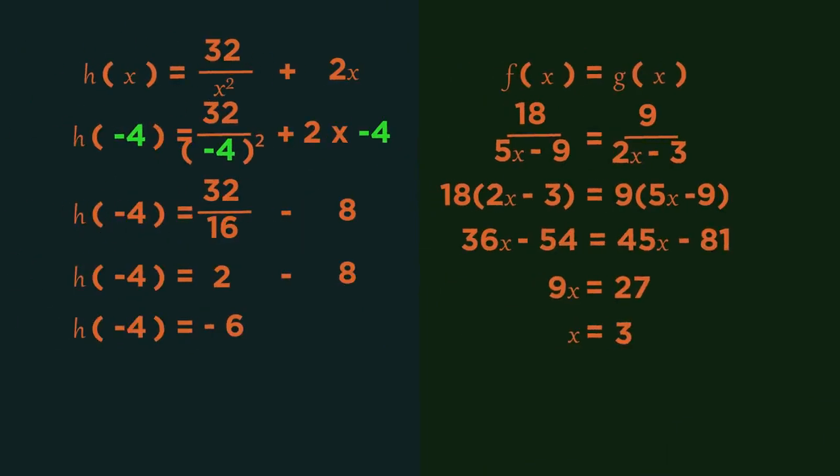How did you get on? Did you get the function of h equals negative 6 when the input is negative 4? And x equals 3 when function f and function g are equal?